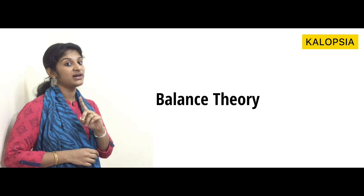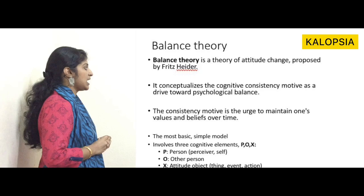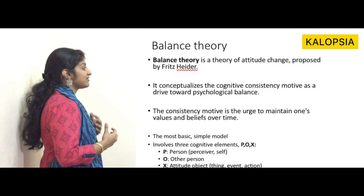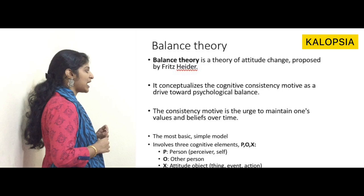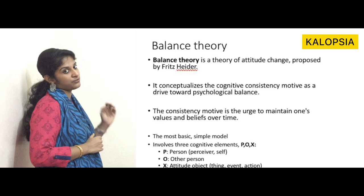The first cognitive theory is balance theory, proposed by Fritz Heider. It conceptualizes the cognitive consistency motive as a drive toward psychological balance. The consistency motive is an urge to maintain one's values and beliefs over time. The most basic model involves three cognitive elements: P (person), O (other person), and X (attitude object).